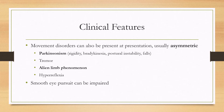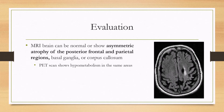On eye exam, smooth pursuit can be impaired and there can be saccades instead of smooth pursuit. For evaluation, an MRI brain may show asymmetric atrophy of the posterior frontal and parietal regions — the most affected areas — as well as the basal ganglia and corpus callosum. Note that early in the course, the MRI brain may be normal. If a PET scan is done, it can show hypometabolism in those same affected areas.